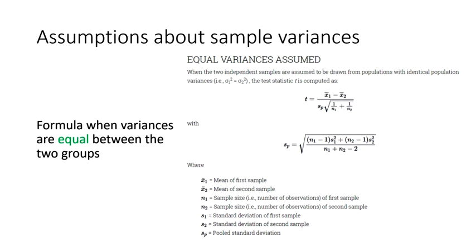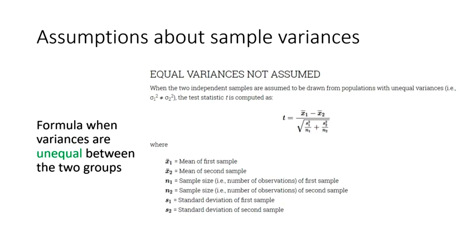An independent samples t-test relies on the variance of the two groups being about equal. This is important enough that statistical software will make two calculations. The first uses an equation that assumes the variances of the two groups are equal, or at least roughly equal. The second formula makes adjustments and produces results assuming the variances of the two samples are unequal.